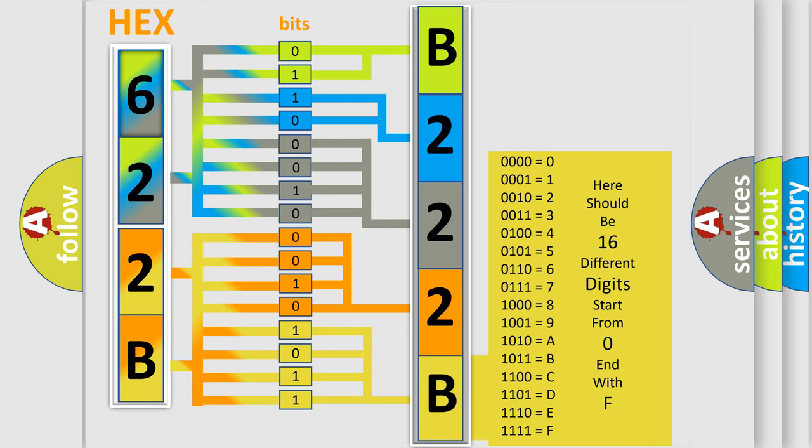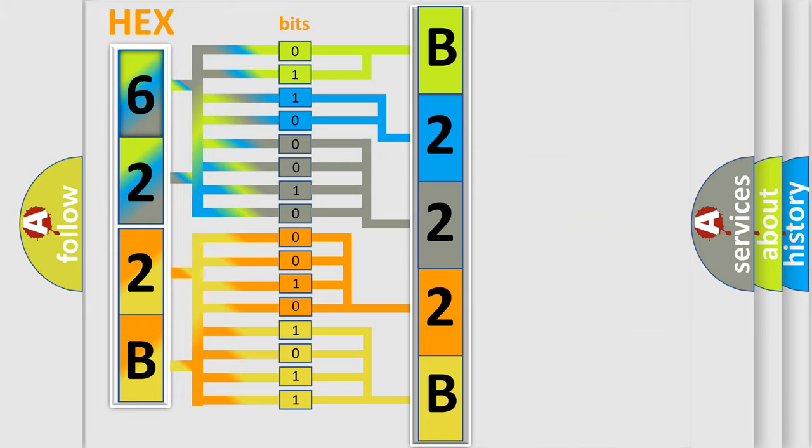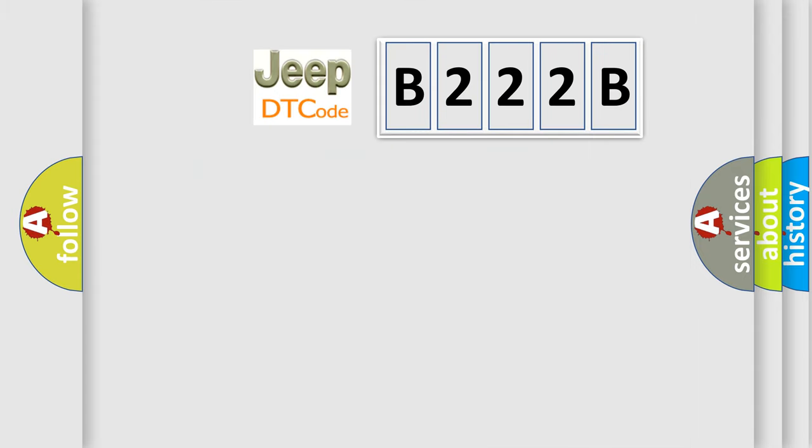We now know in what way the diagnostic tool translates the received information into a more comprehensible format. The number itself does not make sense to us if we cannot assign information about what it actually expresses. So, what does the diagnostic trouble code B222B interpret specifically for Jeep car manufacturers?